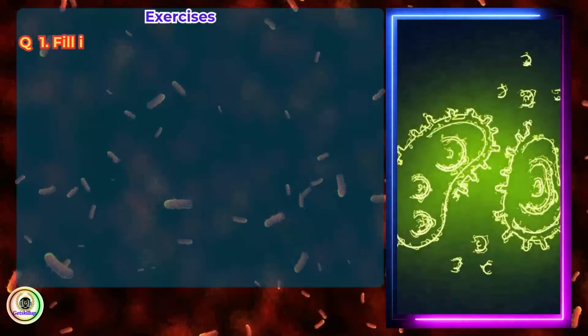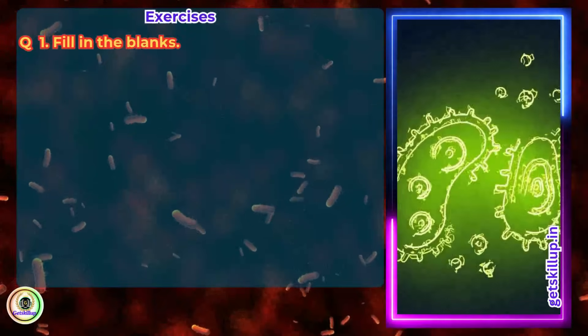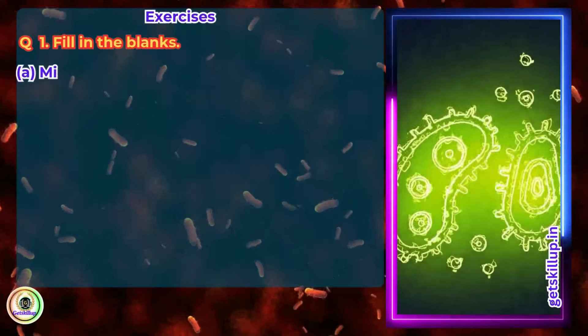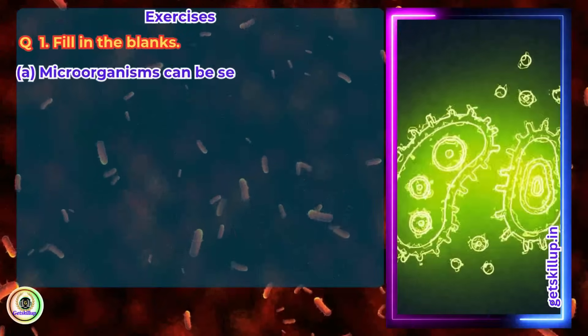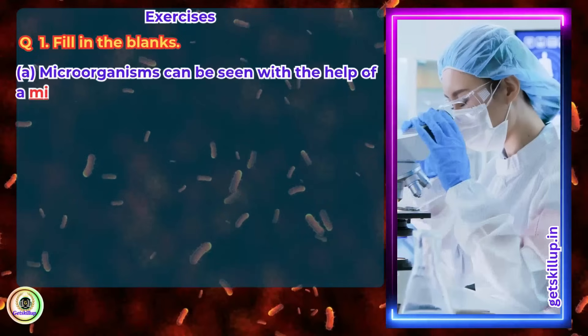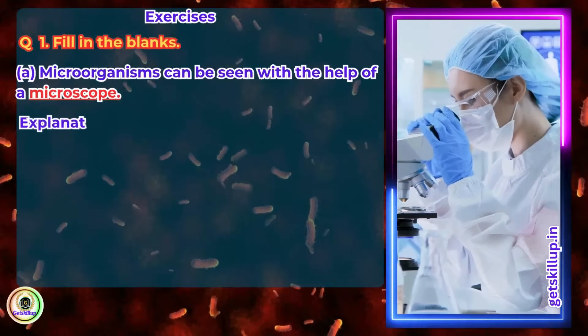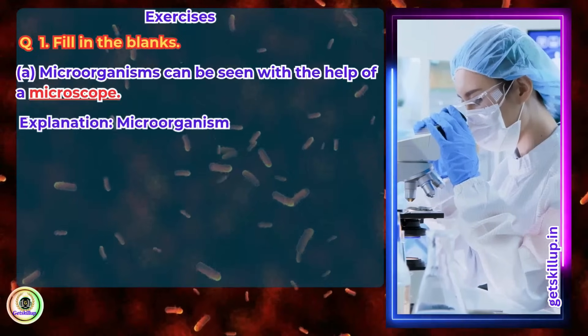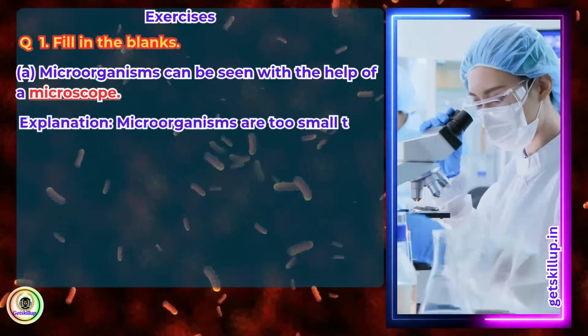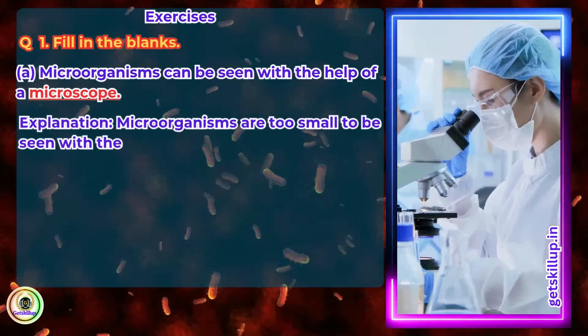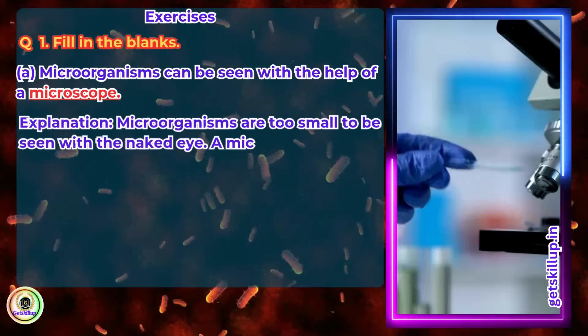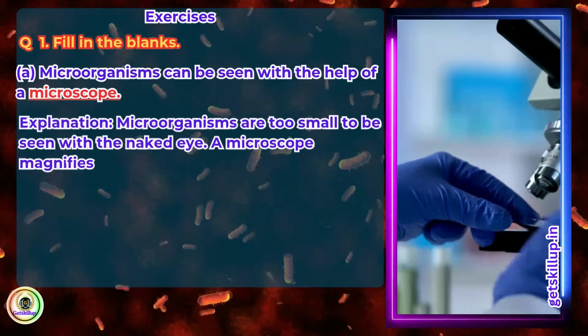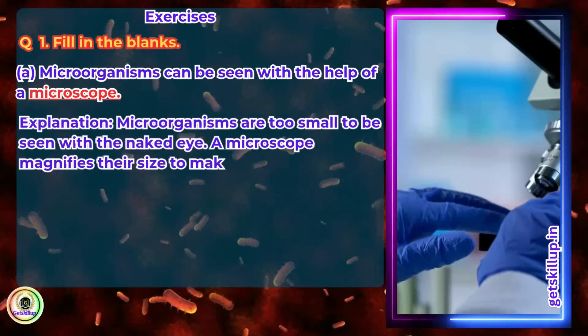Exercises Question 1. Fill in the blanks. Microorganisms can be seen with the help of a microscope. Microorganisms are too small to be seen with the naked eye. A microscope magnifies their size to make them visible.